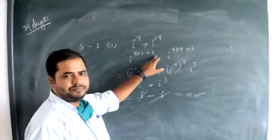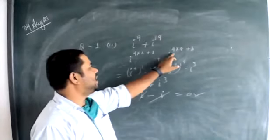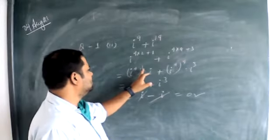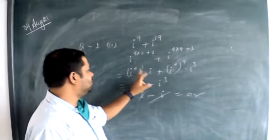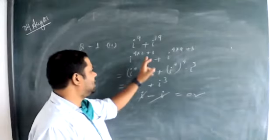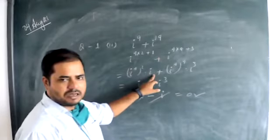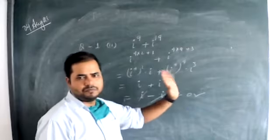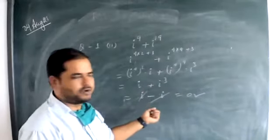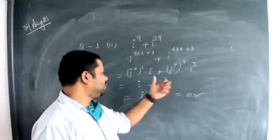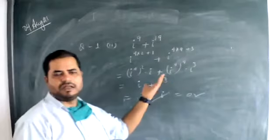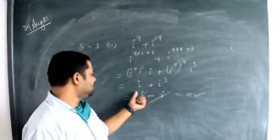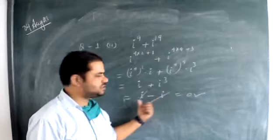i to the power 4 equals positive 1. So i to the power 4 equals 4 plus 3, meaning i to the power 4, and since i squared times i squared equals i to the power 4 — according to the rule of exponents — i plus i, because i squared is 1, any power of 1 is 1. So this gives i, and i squared is minus i.